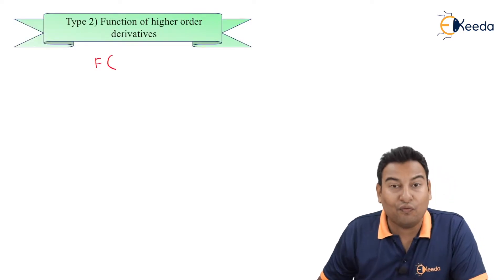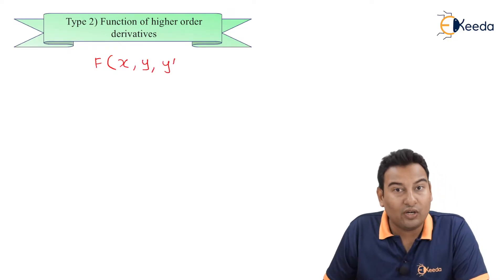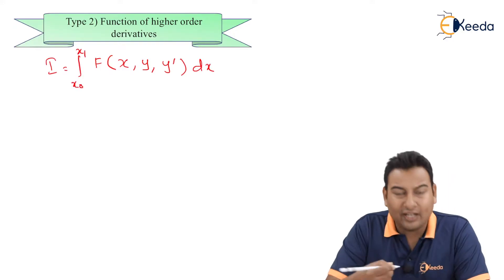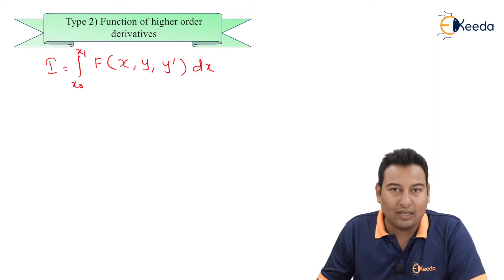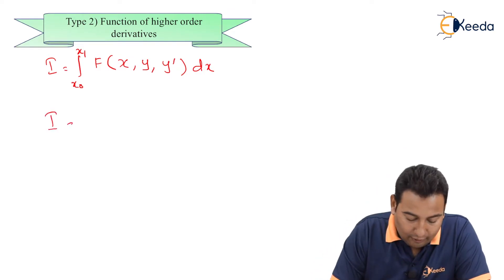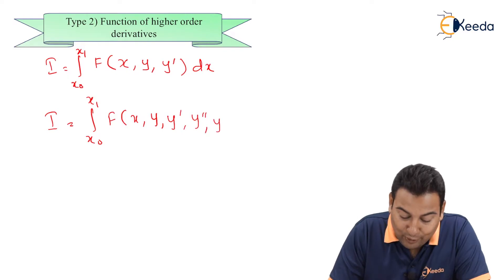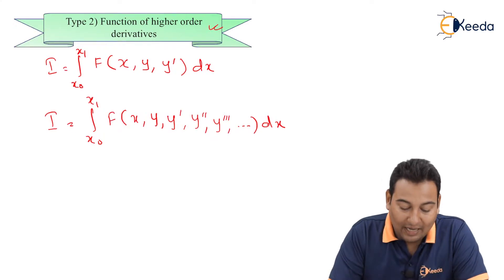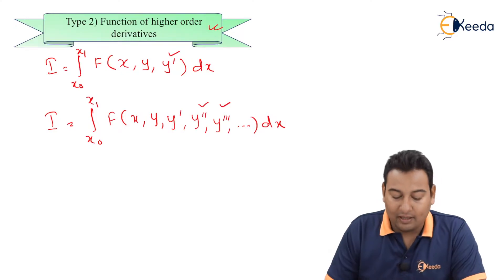Till now we got the functional in terms of x, y, and y dash. The problem used to look like this: x0 to x1 or x1 to x2 and so on - that was the functional till now. Now we are moving ahead; here the functional will be in terms of x, y, y dash, y double dash, y triple dash, and so on, into dx.